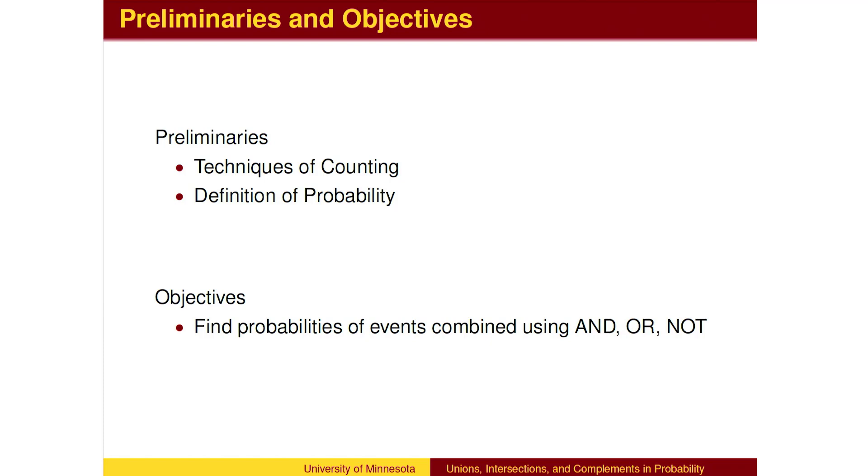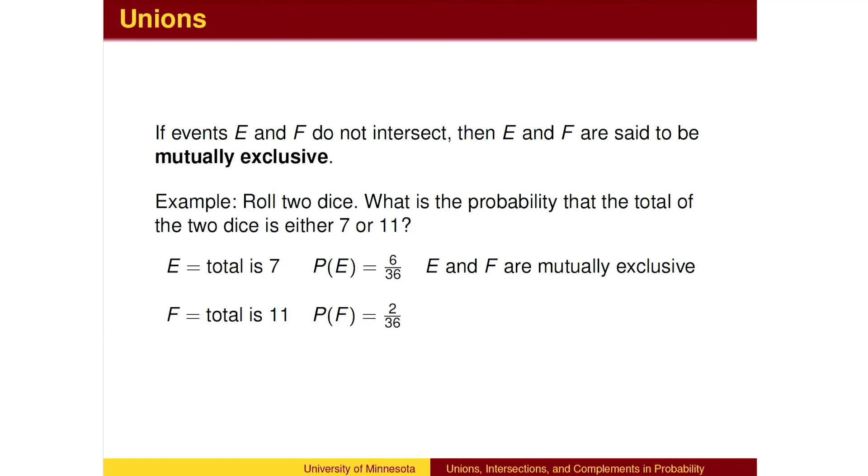In this lesson, we will calculate probabilities of events combined using the conjunctions AND, OR, and NOT. The first idea is the union of two events combined using the word OR. It is easiest to calculate the probability if the two events are mutually exclusive, meaning that the two events can't happen at the same time.